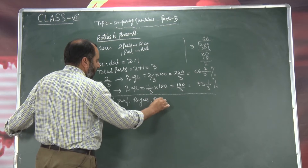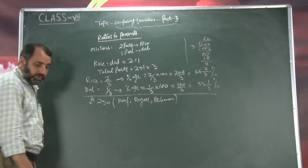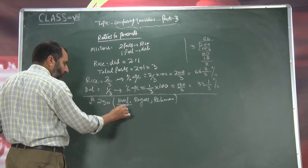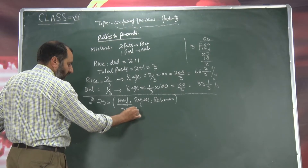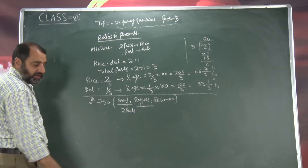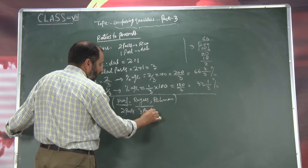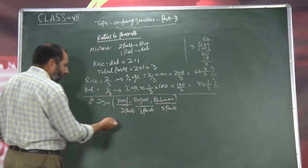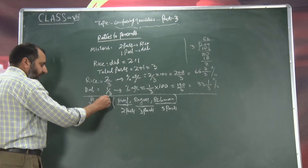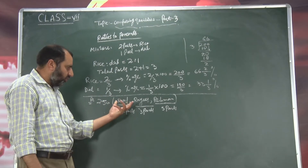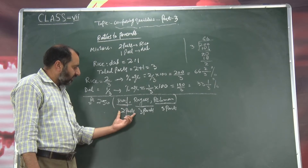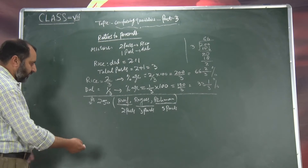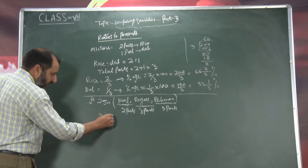Rais and Rahman. Ab yahaan kya karna hoga — yahaan two hundred fifty hai. Hum kehte hai ki Roof ne do parts ismein se liye hai, Rais ne teen parts liye hai, aur Rahman ne five parts liye hai. Ab yahaan ratio kya ban gaya — two hundred fifty rupees total, yeh humne teen students mein divide ki hai. Roof ne do parts liye, Rais ne three parts liye, Rahman ne five parts liye. Ab in ko hum pehle ratios mein convert karingi — this is two is to three is to five.